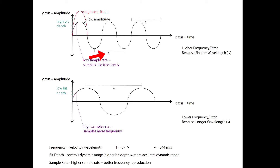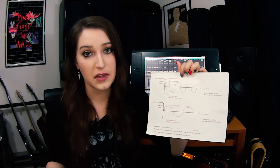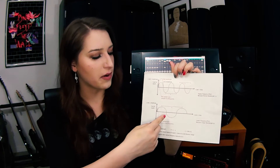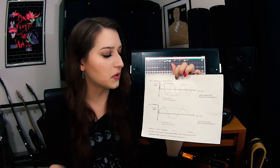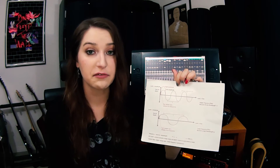One of the things that ties into sample rate is the Nyquist theorem, which states that if we're going to accurately recreate a certain frequency, we're going to have to sample its wavelength at least twice. Wavelength ties into frequency — a shorter wavelength means a higher frequency, and a longer wavelength means a lower frequency. That little lambda symbol on my chart is the wavelength. With the Nyquist theorem, you have to sample that twice, so looking at lower versus higher frequencies, the shorter wavelength is going to have a problem first, because you need a more frequent sampling rate to accurately recreate it.